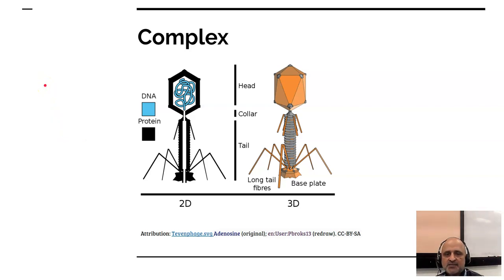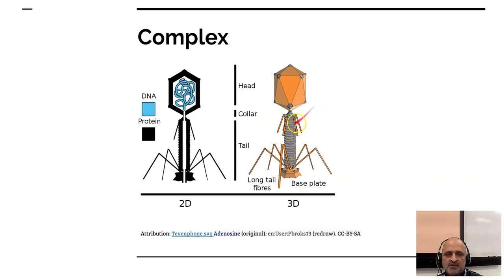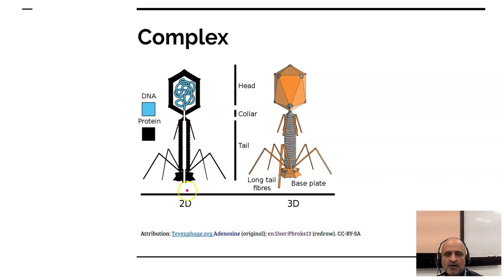We also have complex architecture in the case of phages. Phages comprise of a head, a collar, and a tail. These are complex viruses which infect bacteria. Bacterial viruses are far more complex than eukaryotic viruses — they have specific proteins which define the head, the collar, the tail, as well as fibers. This bacteriophage functions by injecting its DNA into the bacterial host.